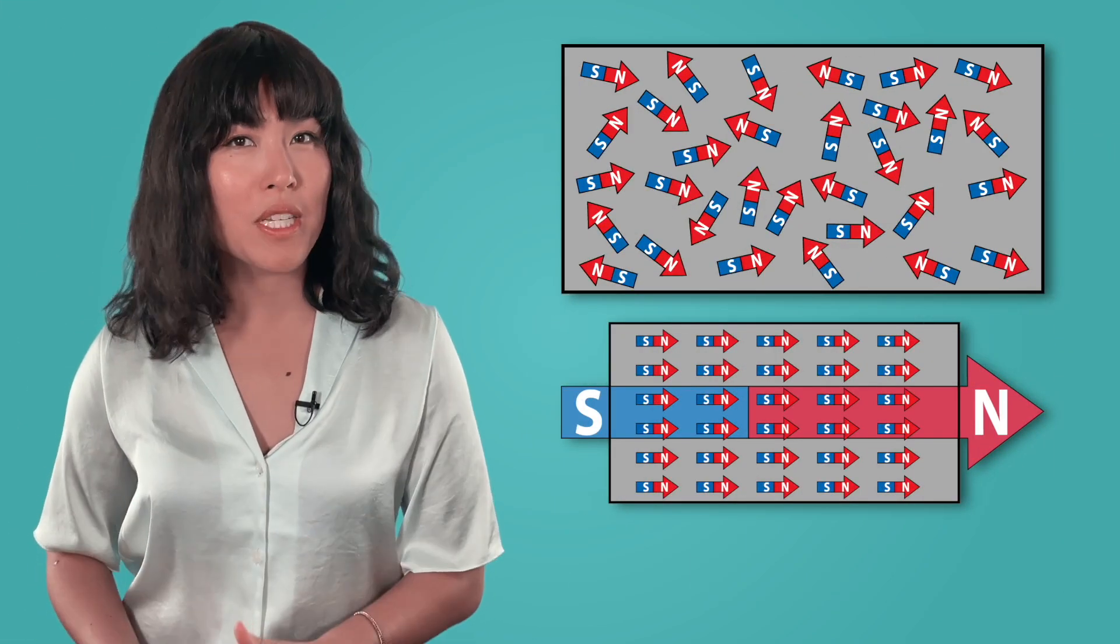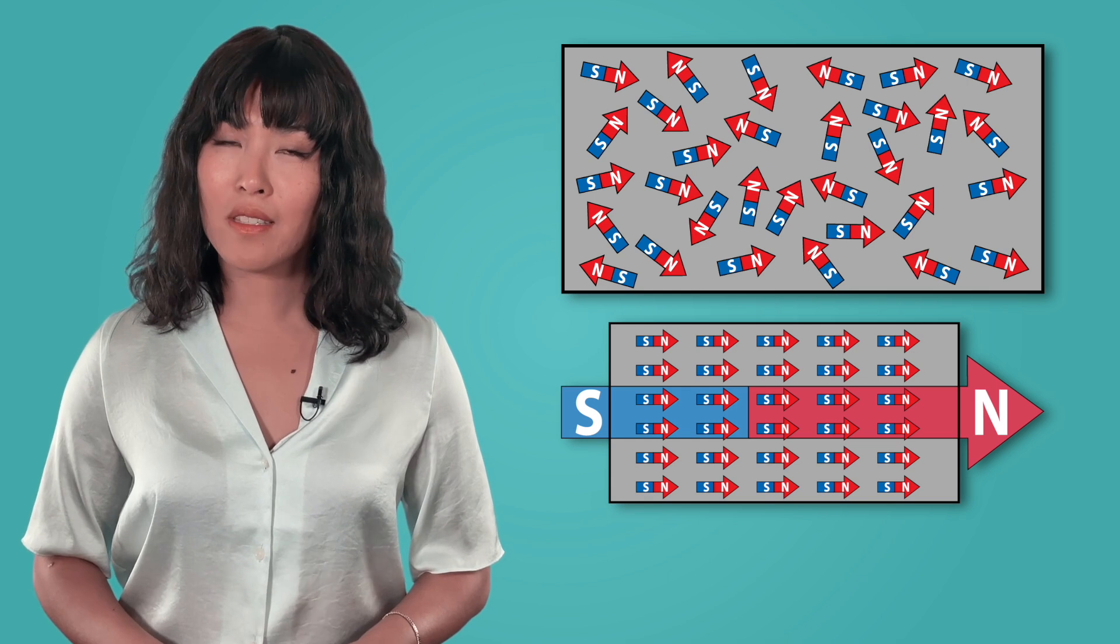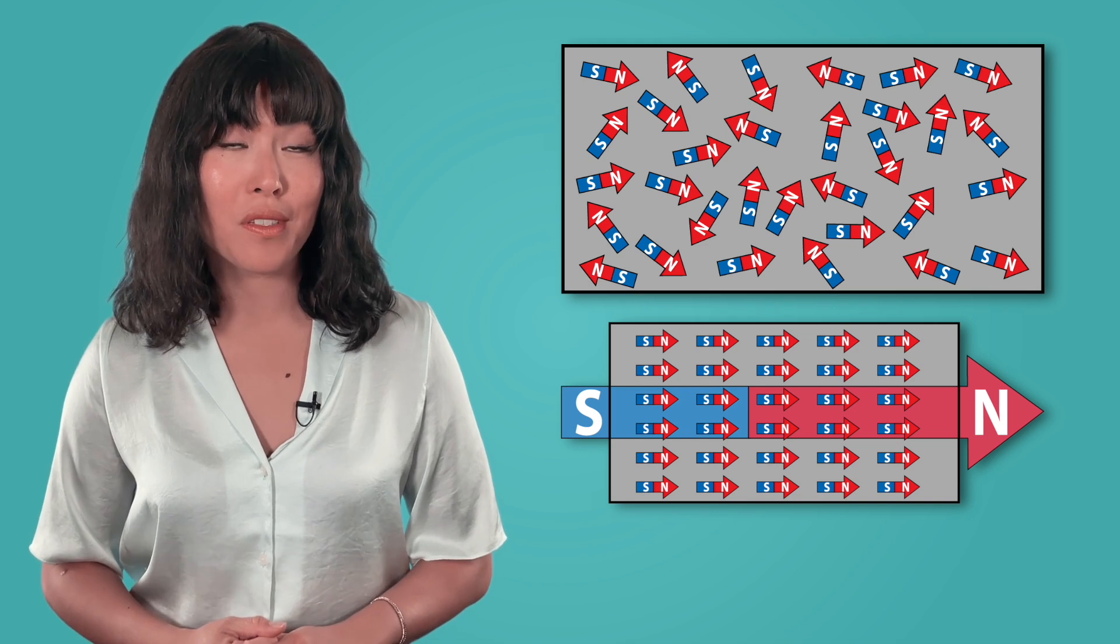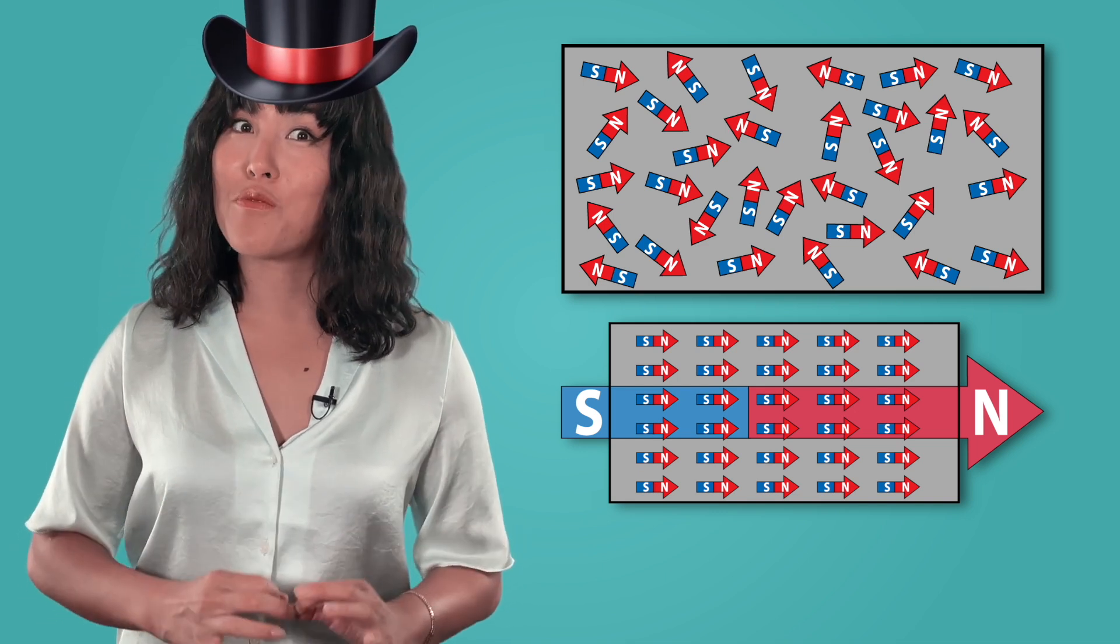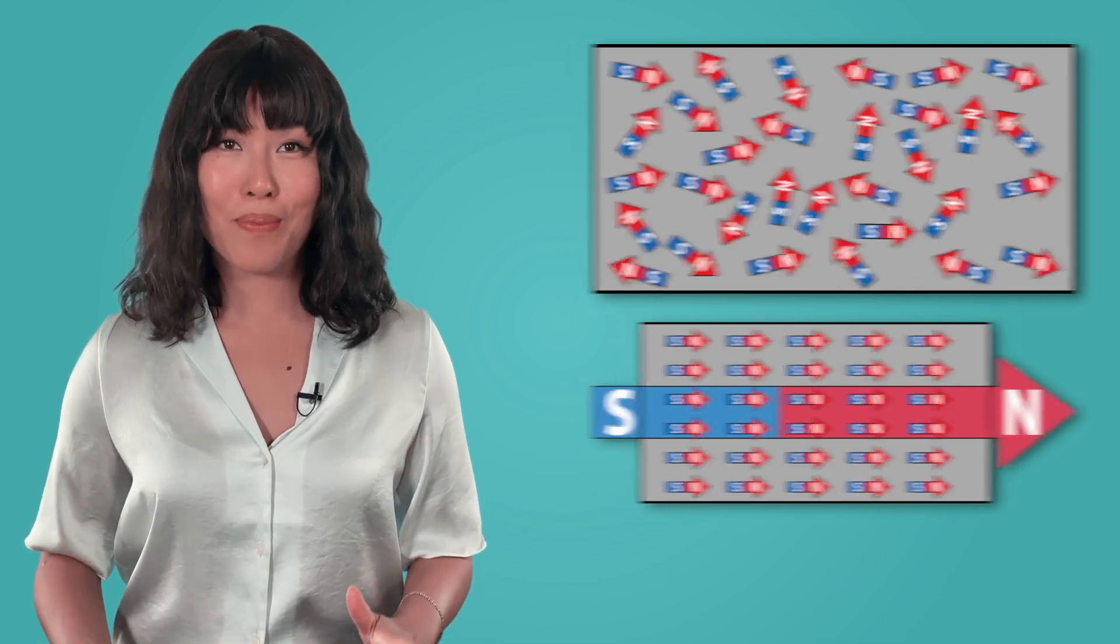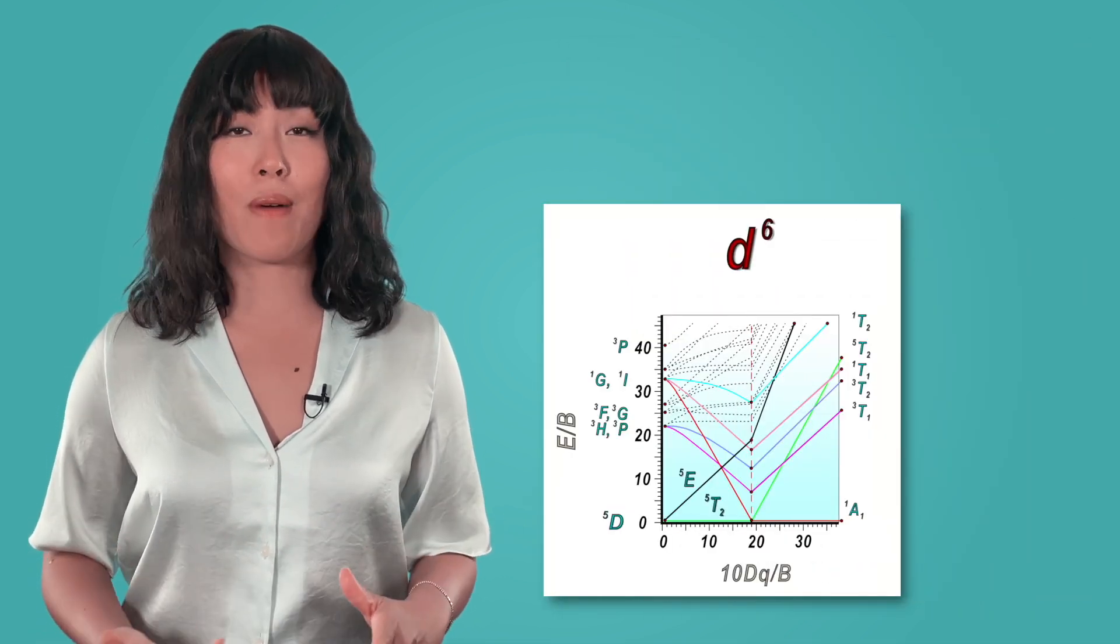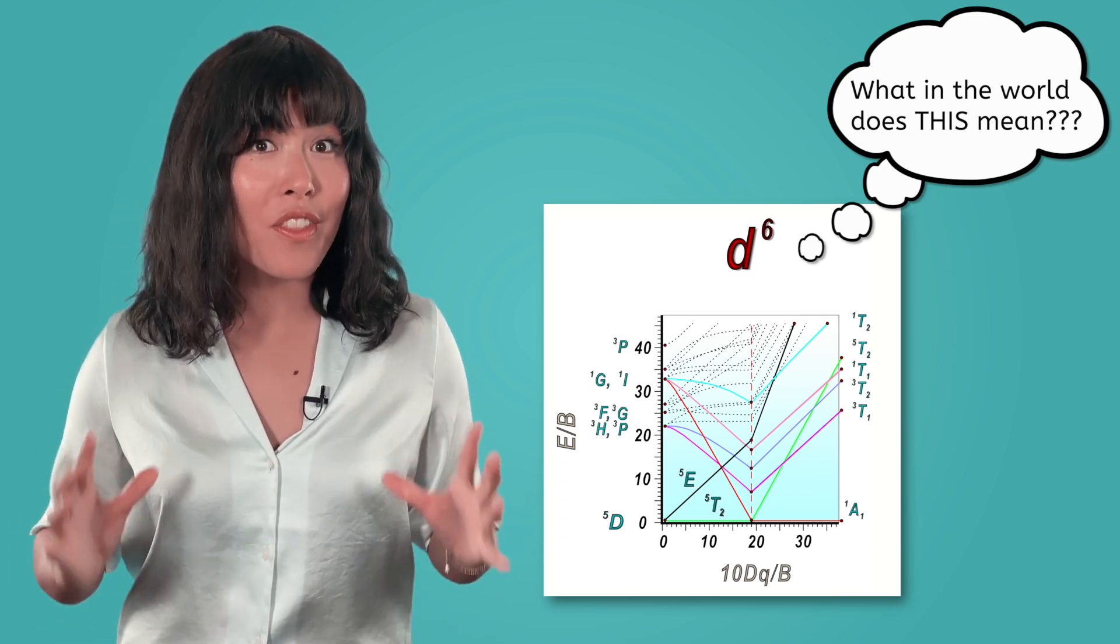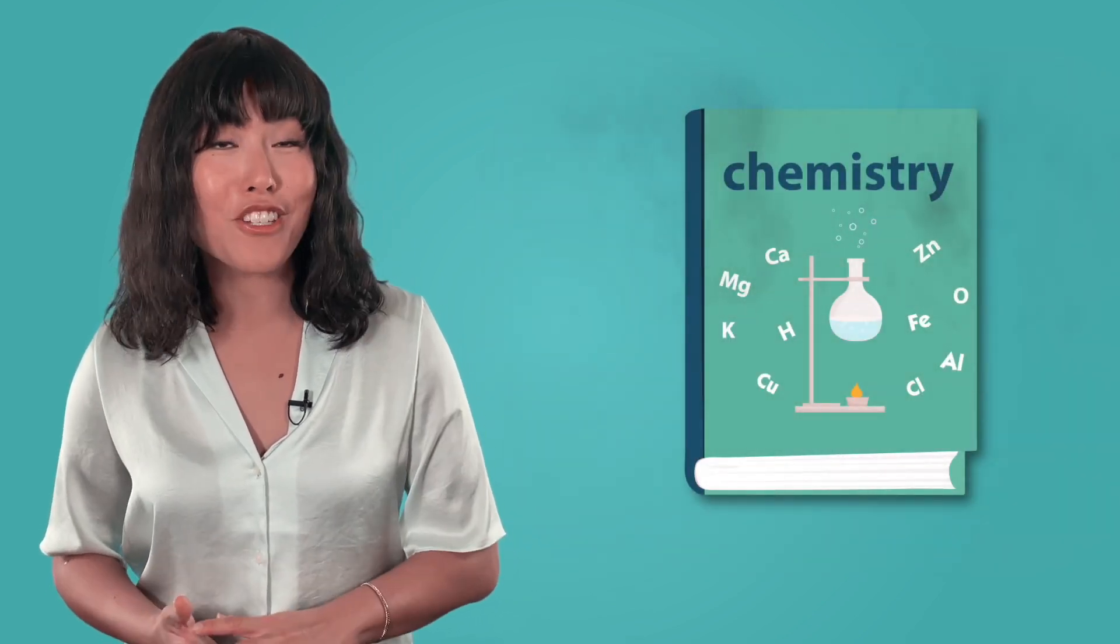So why do some materials create magnetized domains while others don't, even when their individual atoms have magnetic poles? This is where it might really feel like magic. Science can explain it, but unfortunately, it involves discussions about electron configurations and energy states that is beyond the scope of this course. So if you want to call it magic for now, I'll let you. But be warned, take a higher level chemistry course and even this bit of magic will get smashed by science.